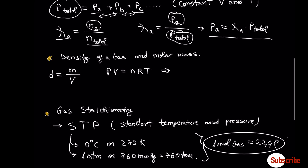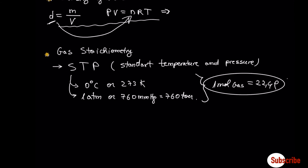We can also find the density of a gas and its molar mass, which we will explore through an example. We also have gas stoichiometry. Keep in mind that at standard temperature and pressure — meaning 0°C or 273 K, and 1 atm or 760 mmHg or 760 Torr — one mole of gas equals 22.4 liters.